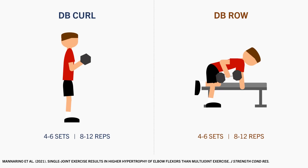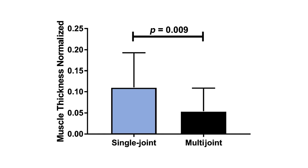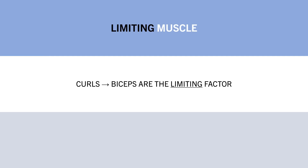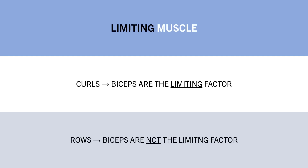For example, this study compared the effects of compound versus isolation lifts on biceps growth. Trainees performed 4–6 sets of 8–12 reps of dumbbell curls for one arm and dumbbell rows for the other arm. The arm performing curls resulted in superior biceps growth, shown in the blue bar, compared with the arm performing dumbbell rows, shown in the orange bar, although the biceps still saw some hypertrophy from the rows alone. This is likely because curls involve the biceps as the limiting muscle, whereas rows do involve the biceps to some extent but they aren't maximally stressed because the back muscles are the limiting factor instead.